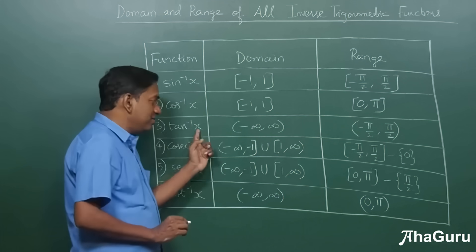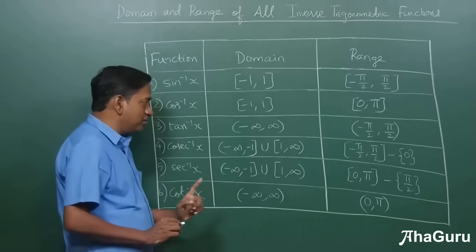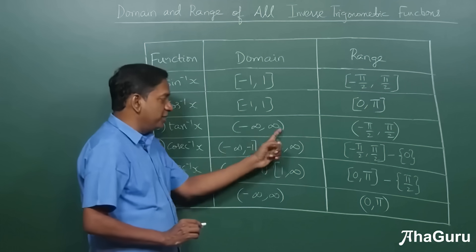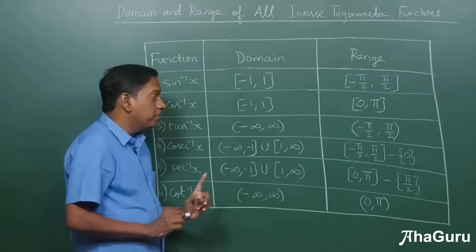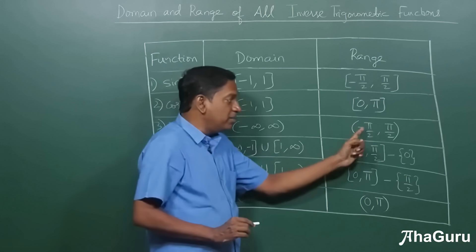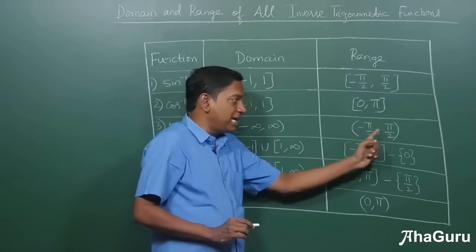Now if we take tan inverse as well as cot inverse, the domains are all real numbers. That means minus infinity to infinity, but the range is again open interval minus pi by two to pi by two for tan.